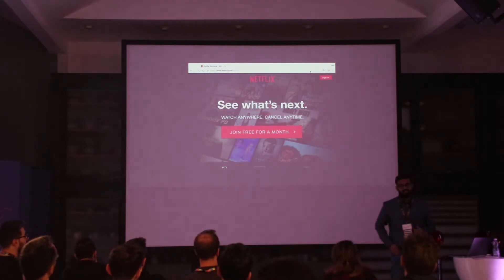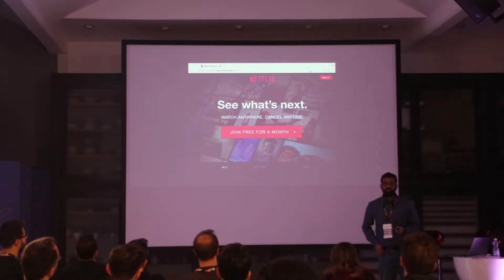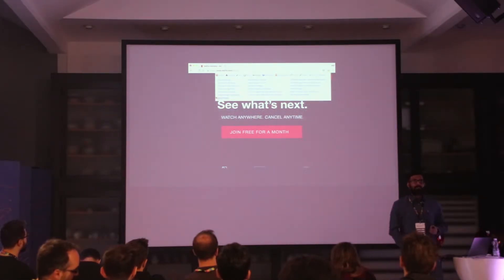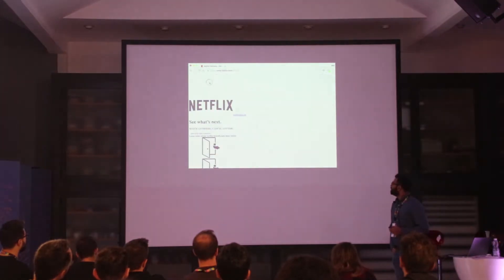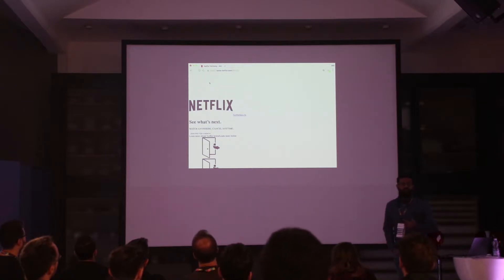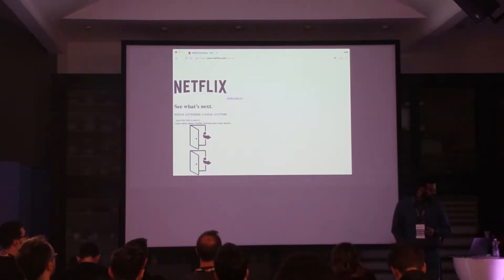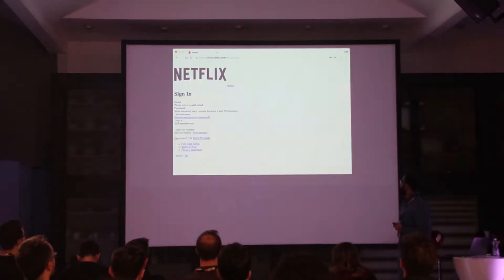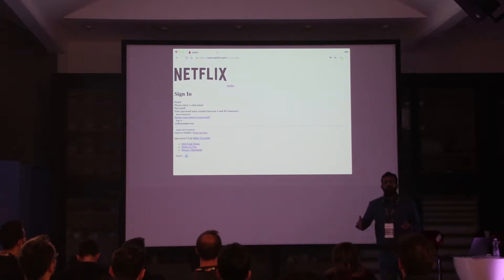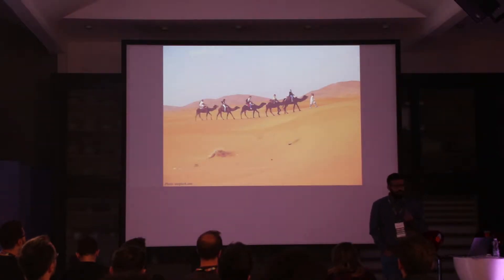The best example is Netflix — I love Netflix. When you remove the styles and images, in just three lines they're talking about: 'see what's next, watch anywhere, cancel anywhere.' That's it, that's the product. And they're giving you a join for free for a month. Even better is their login page — it's basically a sign-in button and some other options. Pretty simple. That's their business model. So try to look for what's the core job of your product.